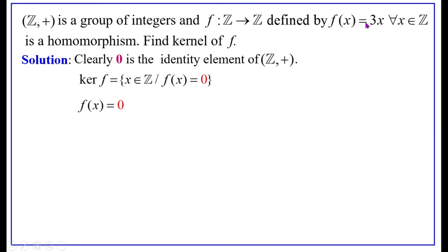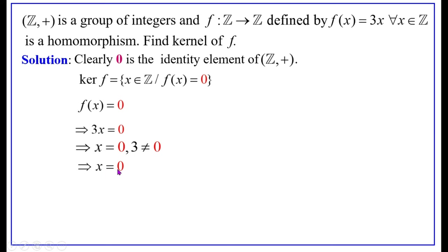F(X) is defined as 3·X. Therefore, 3·X equals 0. Either 3 equals 0 or X equals 0. But 3 cannot be 0, so the only possibility is X equals 0. That is, the only element mapped into the identity of the co-domain group is 0. Hence ker(F) equals {0}, and this 0 is nothing but the identity element of the group Z.